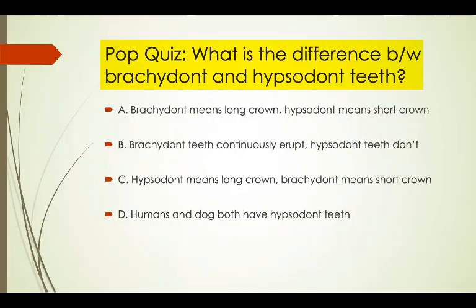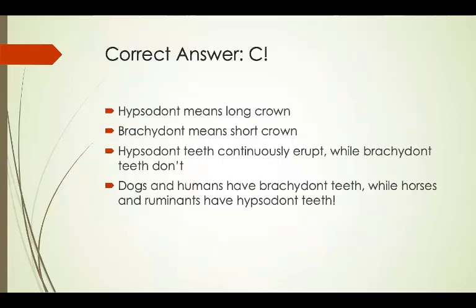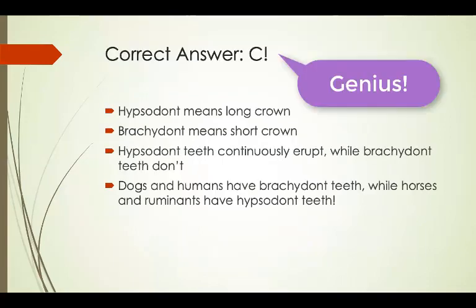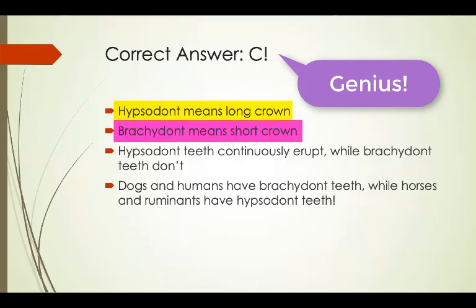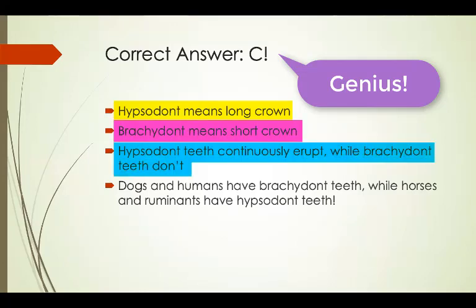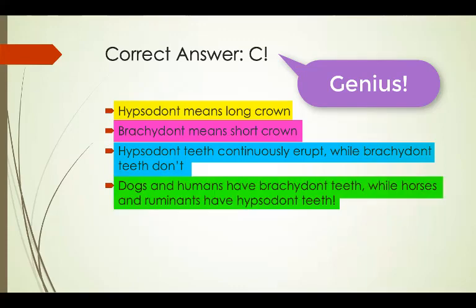What is the difference between brachydont and hypsodont teeth? The correct answer is C. Hypsodont means long crown and brachydont means short crown. Hypsodont teeth continuously erupt through life, but brachydont teeth do not. Dogs and humans have brachydont teeth, but horses and ruminants have hypsodont teeth.